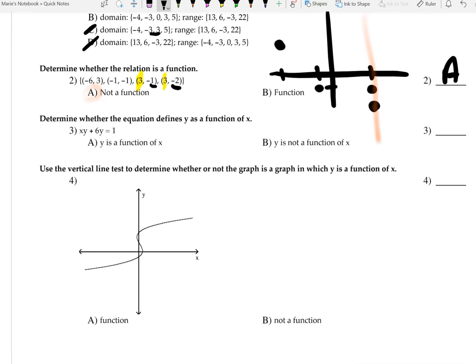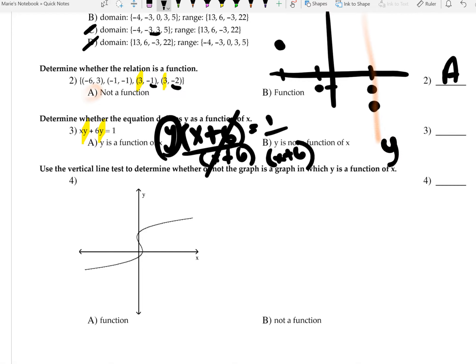For number 3, a lot of you are questioning this one, and the issue here is, you see you have two Ys, which are distributed among X plus 6. So if you do Y and extract it, parentheses X plus 6, and set that equal to 1, I can always divide by this, parentheses X plus 6 on both sides.